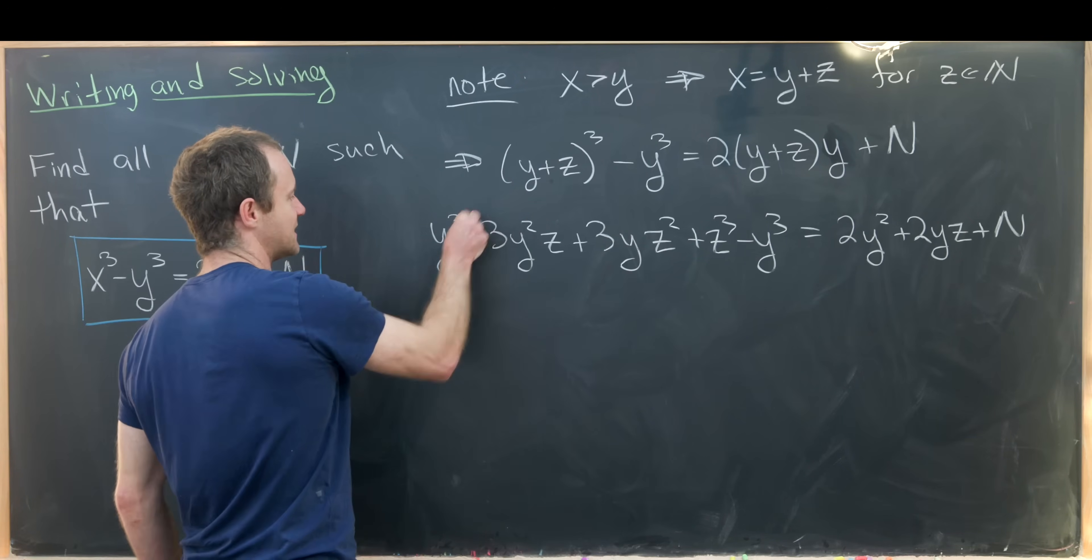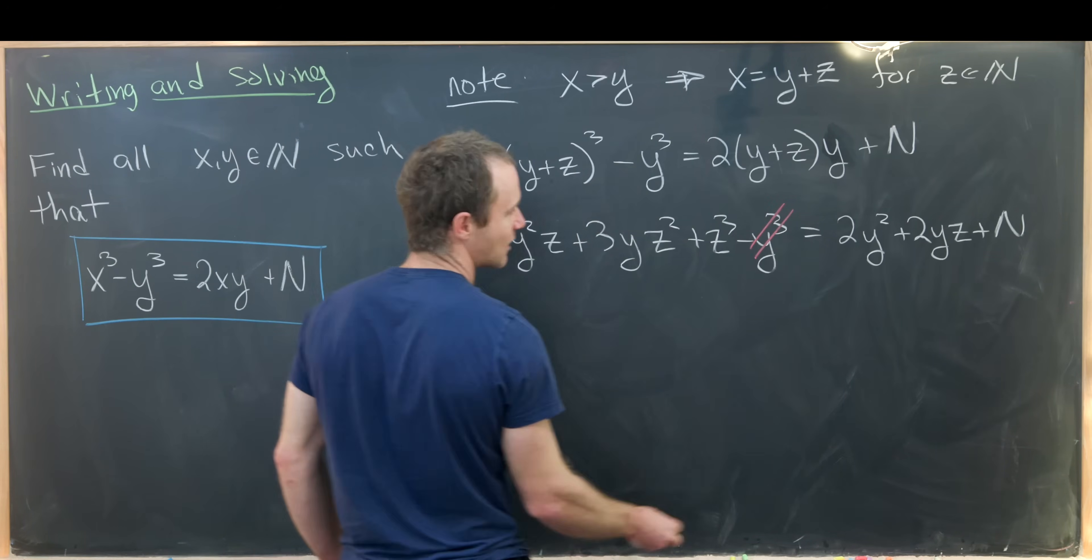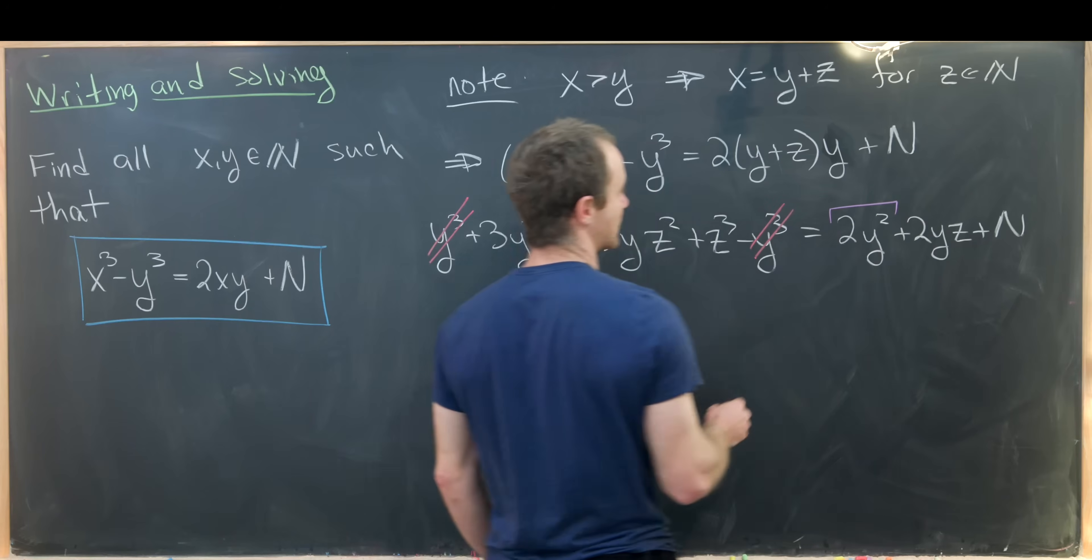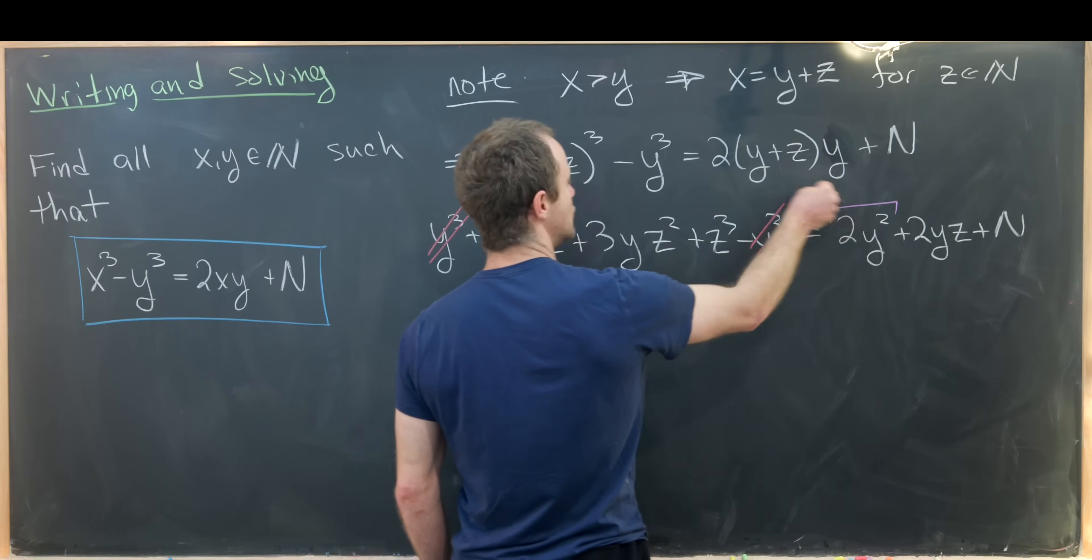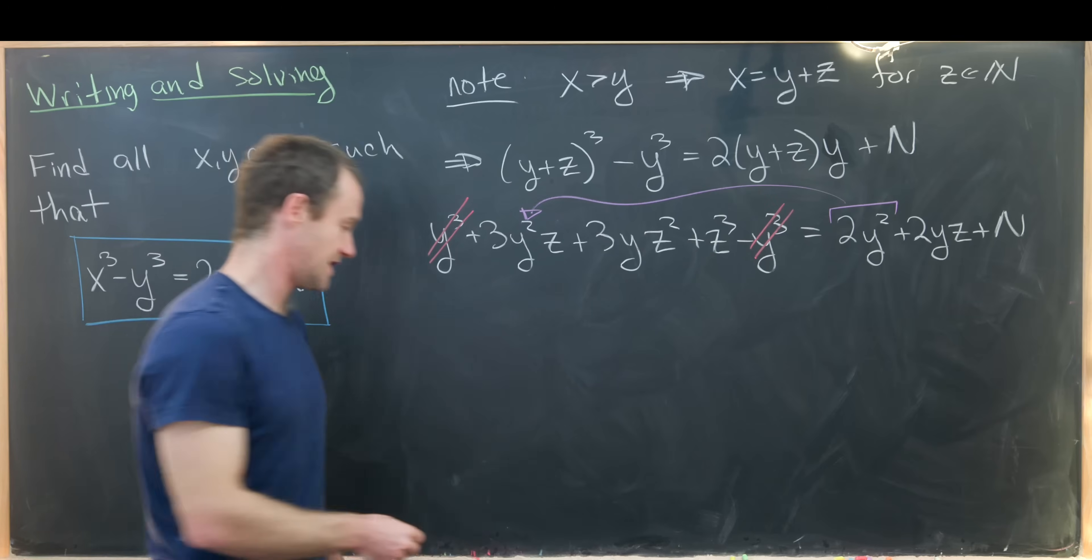Let's do some simplification and move some things around. The most obvious simplification is to cancel this and this out. We can also take this guy right here and move it over to be combined with this y² term.